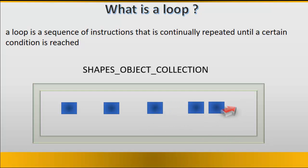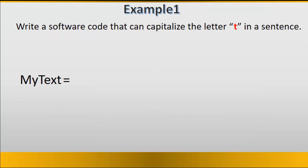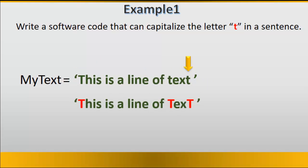Another example is writing software code that can capitalize the letter t in a sentence. For instance we have a variable called myText and it contains a sentence and we want to capitalize the letter t in this sentence which is this is a line of text. Our iterator iterates over the string and converts all of the lowercase t into uppercase t.